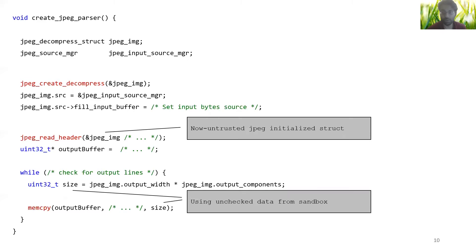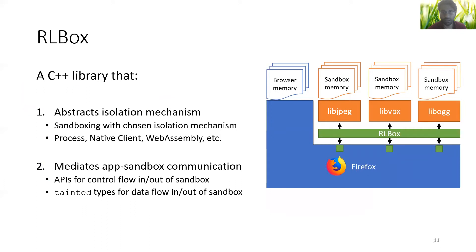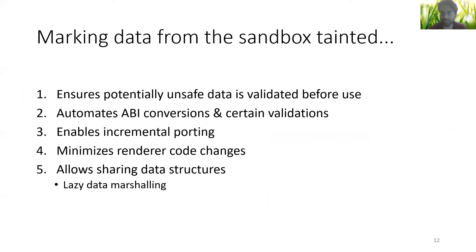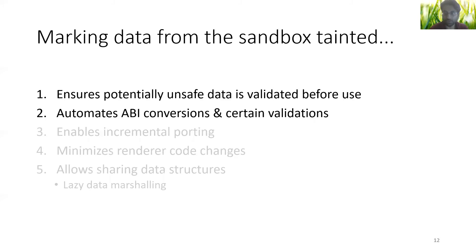To precisely address this problem, we built RLBox. The RLBox framework is a C++ library that does two things: one, it abstracts the underlying isolation mechanism, whether it is process isolation or SFI-based isolation; and two, it mediates all application-sandbox communication, as shown in this figure. It does this by marking all data out of the sandbox as tainted, ensuring that unsafe data from the sandbox can only be used after validation. This is also key to automatically bridging ABI differences and automatically performing certain security validations.